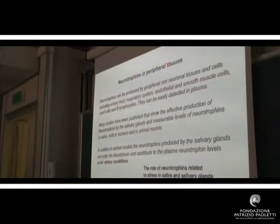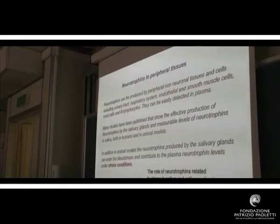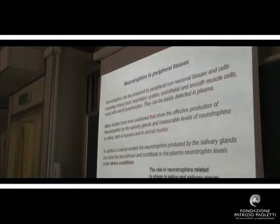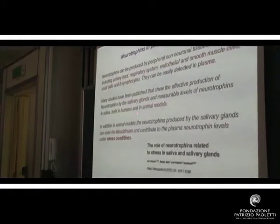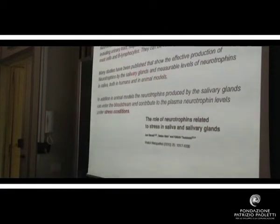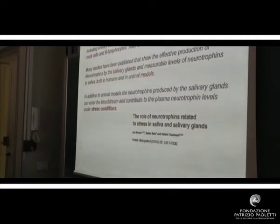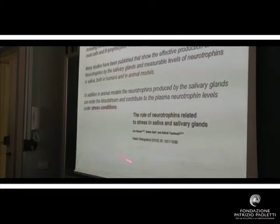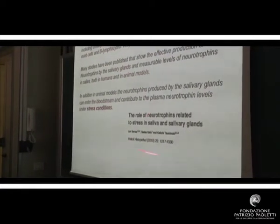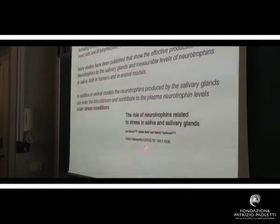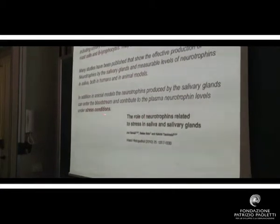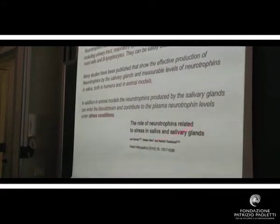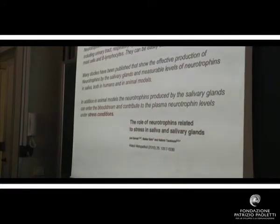Neurotrophins are also produced in peripheral tissues. They can be easily detected in plasma and are heavily produced in salivary glands and measurable also in saliva, both in humans and animal models. There are lots of studies done on animal models, especially in mice, where neurotrophin production has been related to stress.